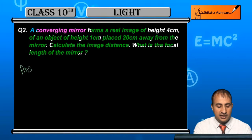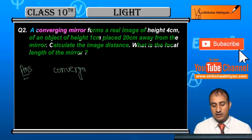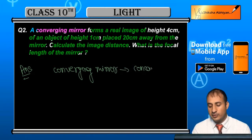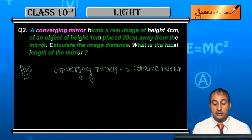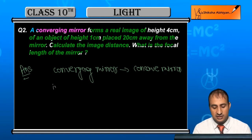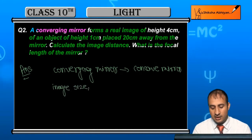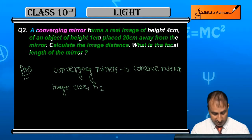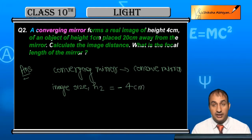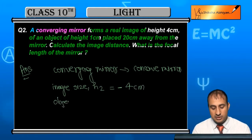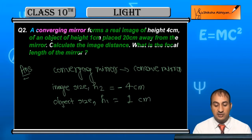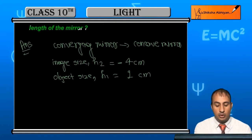See student, here is converging mirror. We know that converging mirror is nothing but concave mirror. In the case of concave mirror, here the image is real. The image size h2 is -4 cm because it's real. The object size h1 is always positive, so h1 is 1 cm. The object is placed 20 cm away from the mirror.